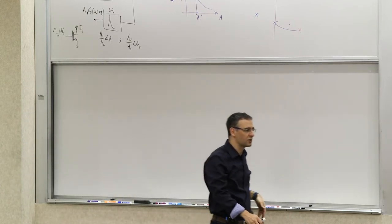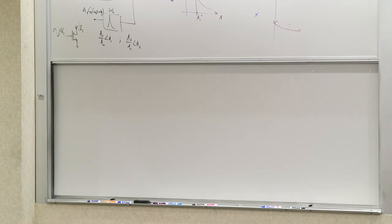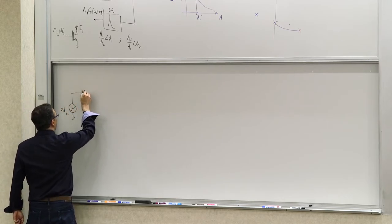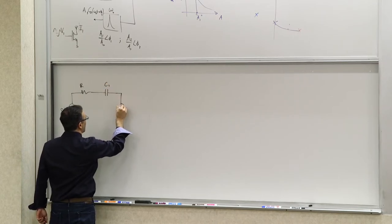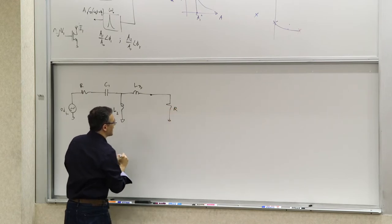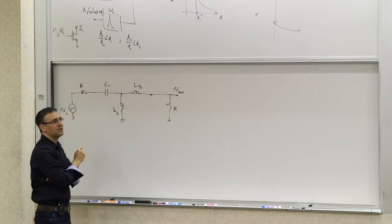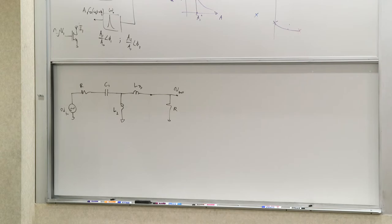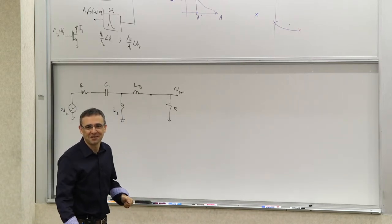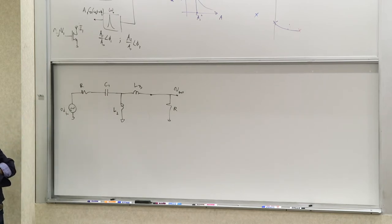Let's do one more example of generalized time and transfer constants. We have an input voltage source with source resistance R connected to capacitor C_1, then an inductor L_2 to ground, then inductor L_3 driving a load resistor R. We want the transfer function V_out/V_in. Before jumping in, let's study it: we have three reactive elements, so we expect three poles.